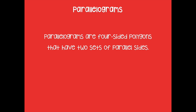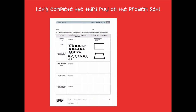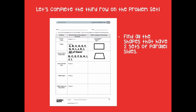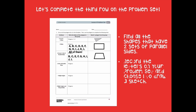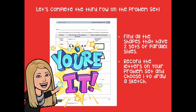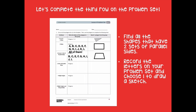Let's talk about parallelograms. Parallelograms are four-sided polygons that have two sets of parallel lines — they need two sets. For row three on the problem set, find all shapes with two sets of parallel sides. The answers are B, C, F, G, H, I, and L. Record the letters and choose one to sketch.